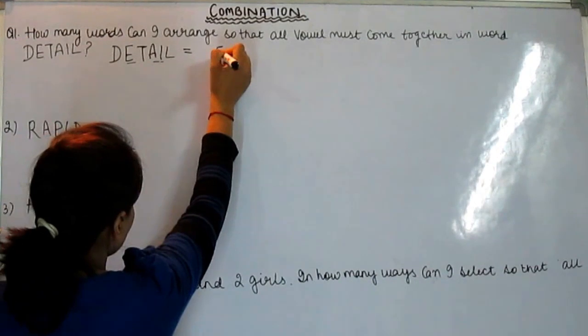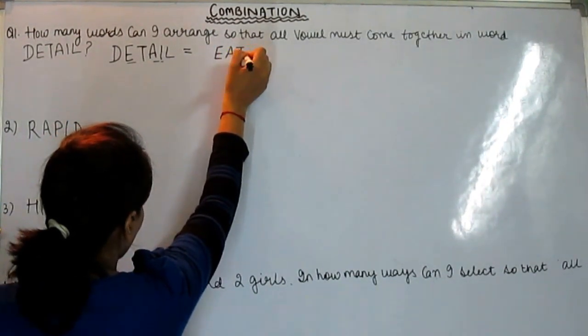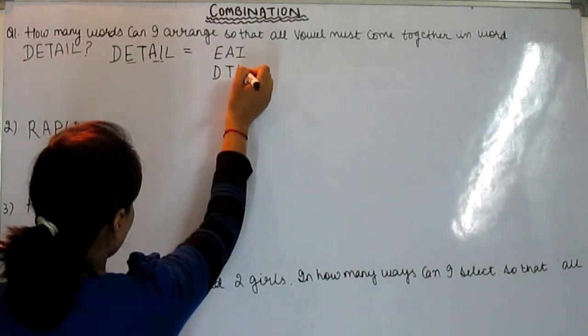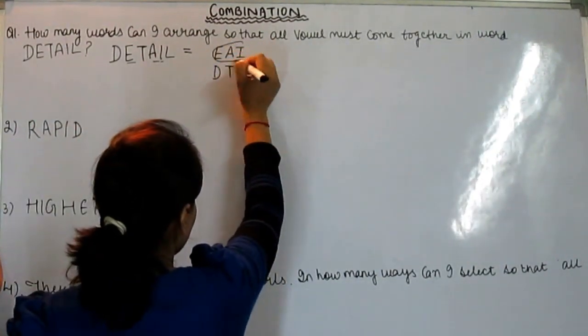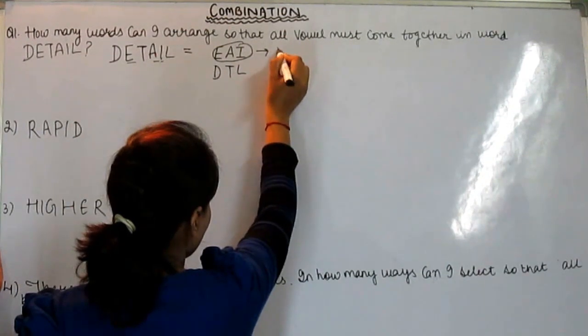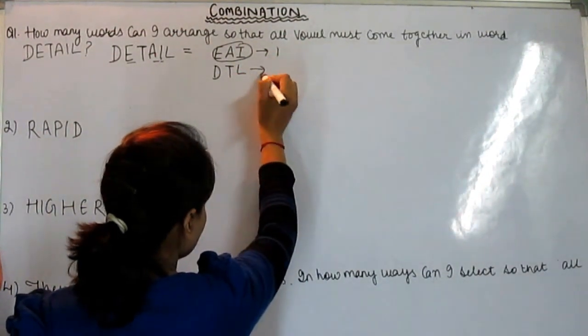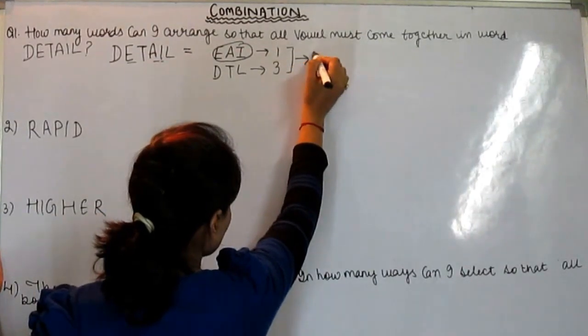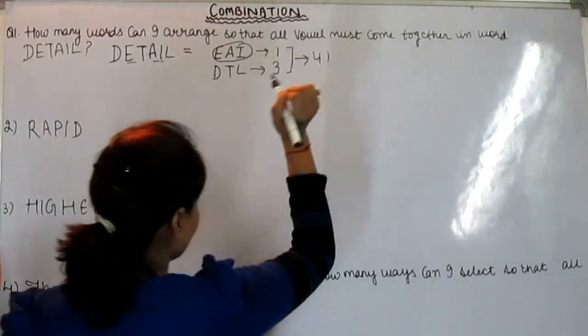T, A, and I. Consonants - how many are there? D, T, L. We will keep the vowels in one group. Consonants are how many? Three. Total is how many? Four. We call it four sections, right?